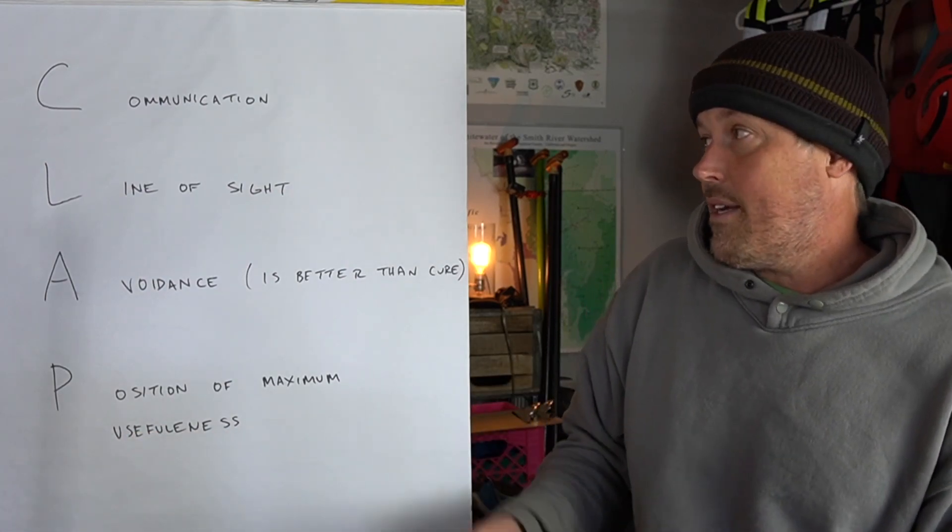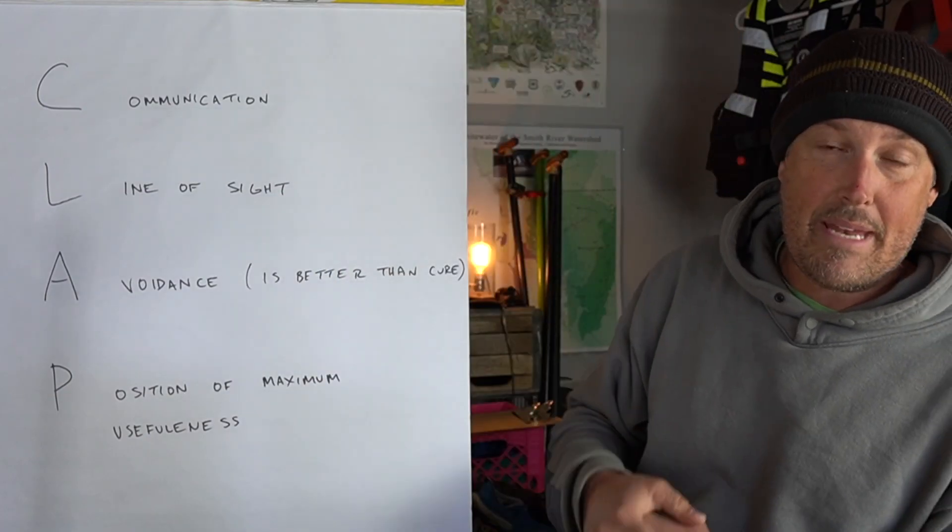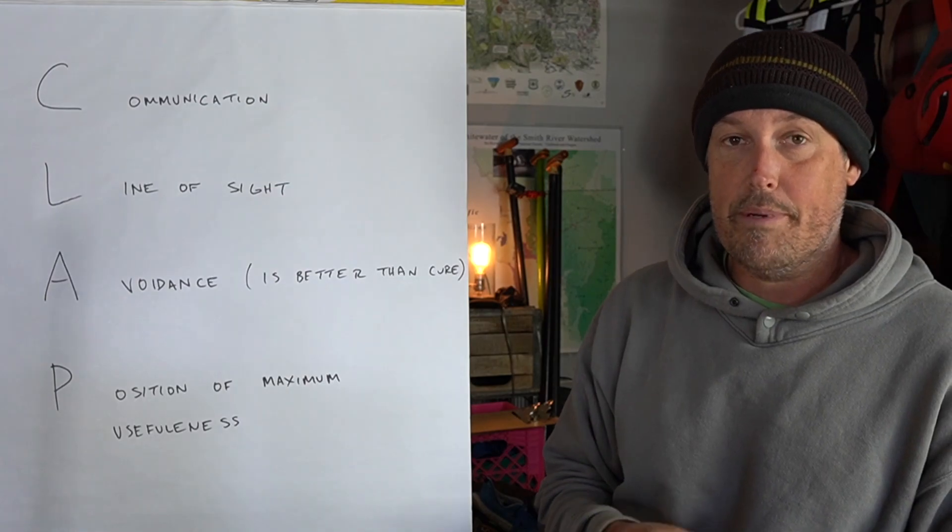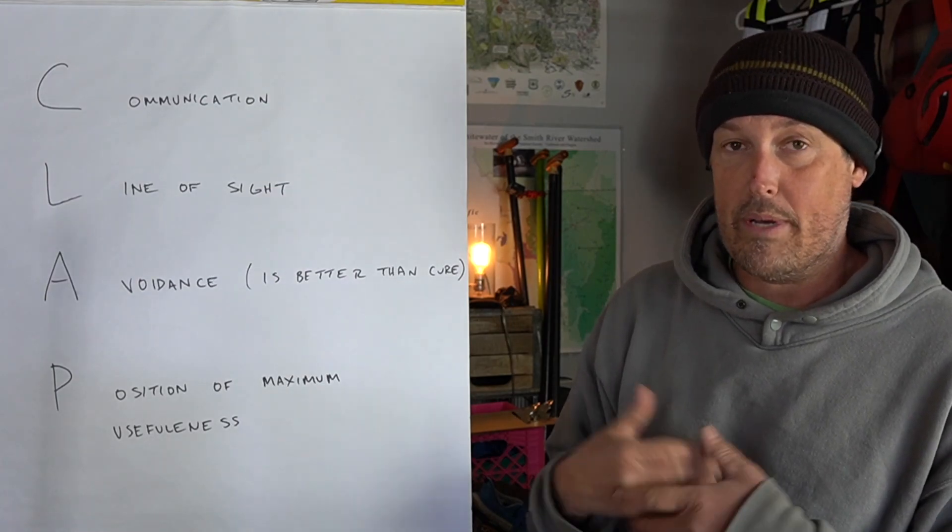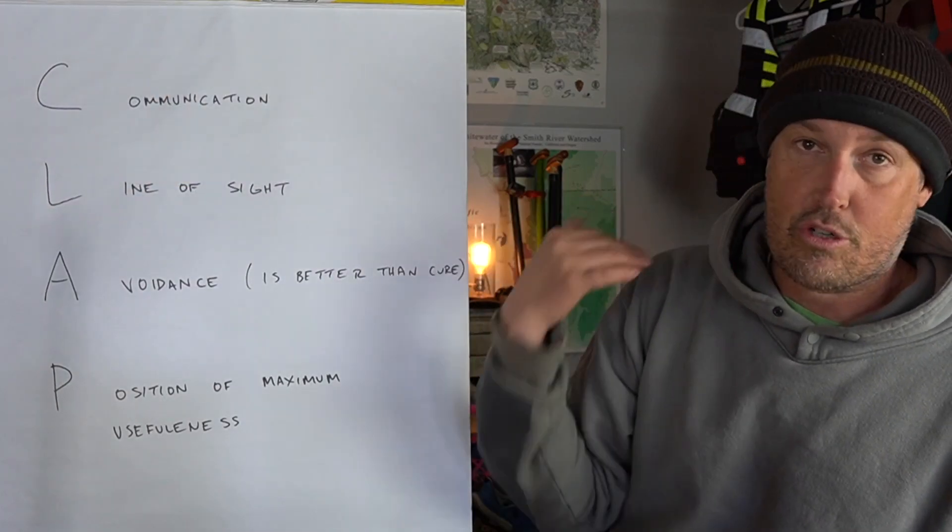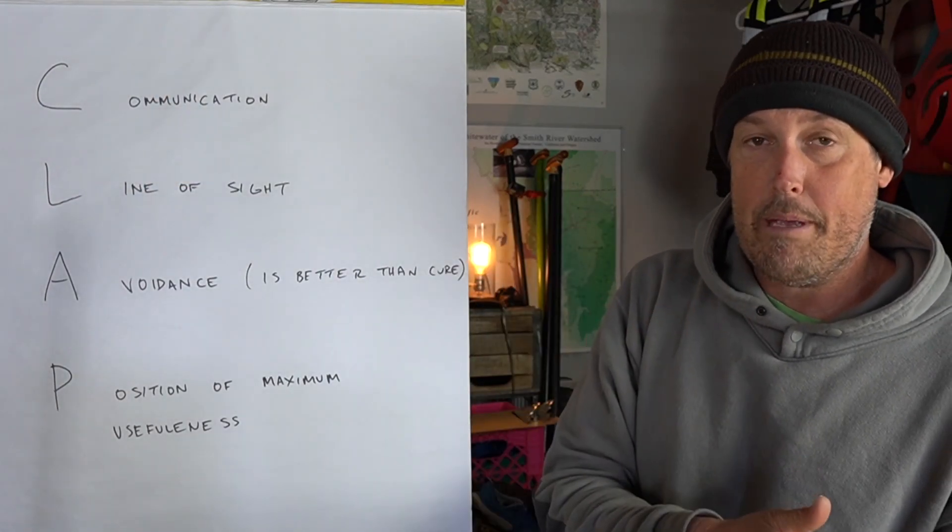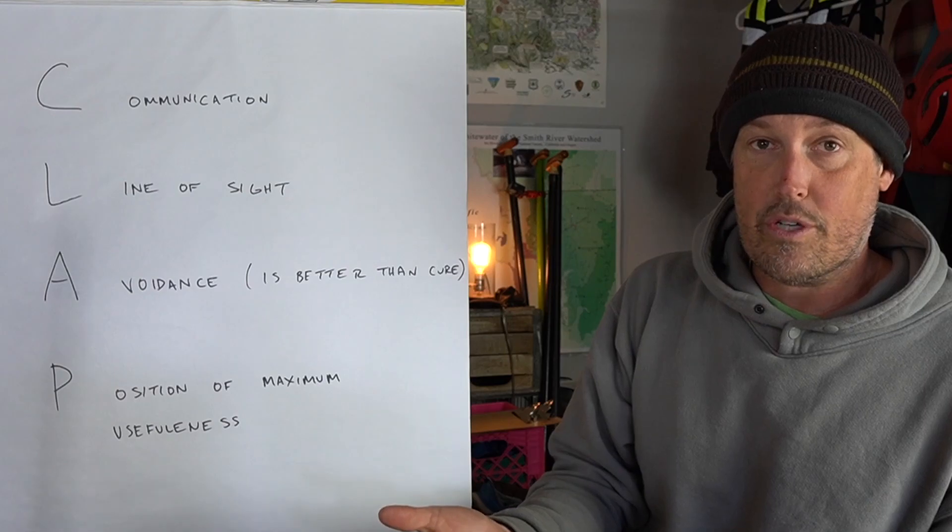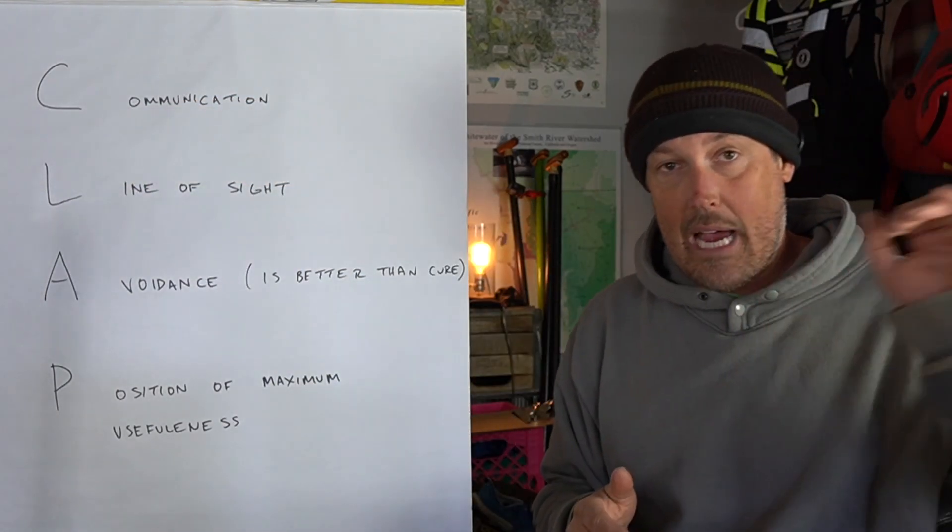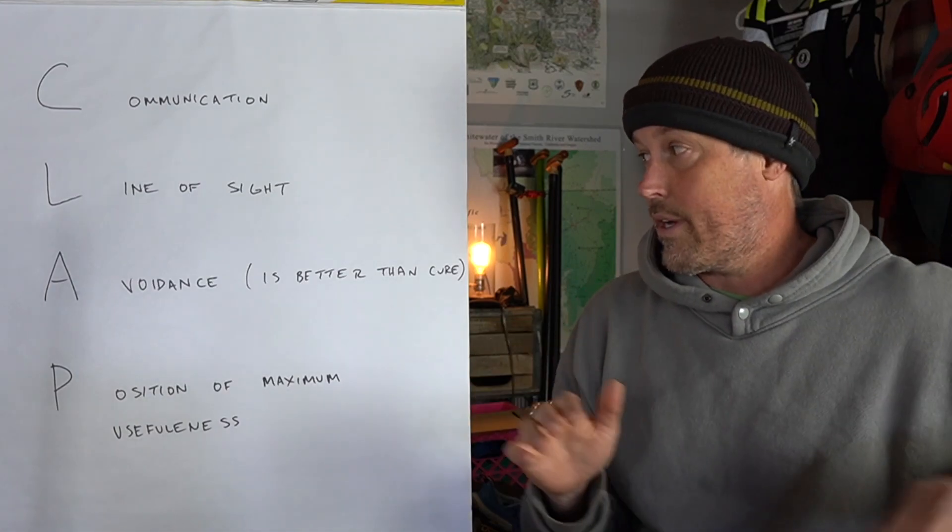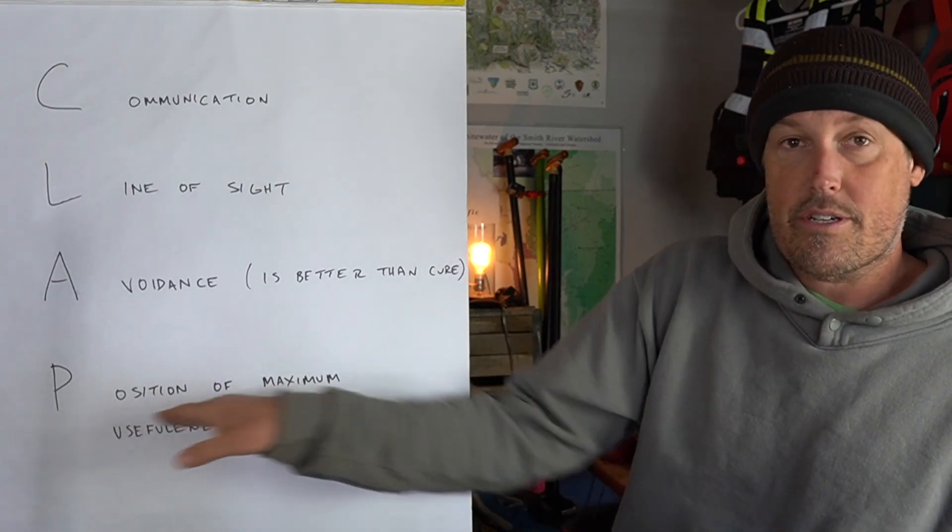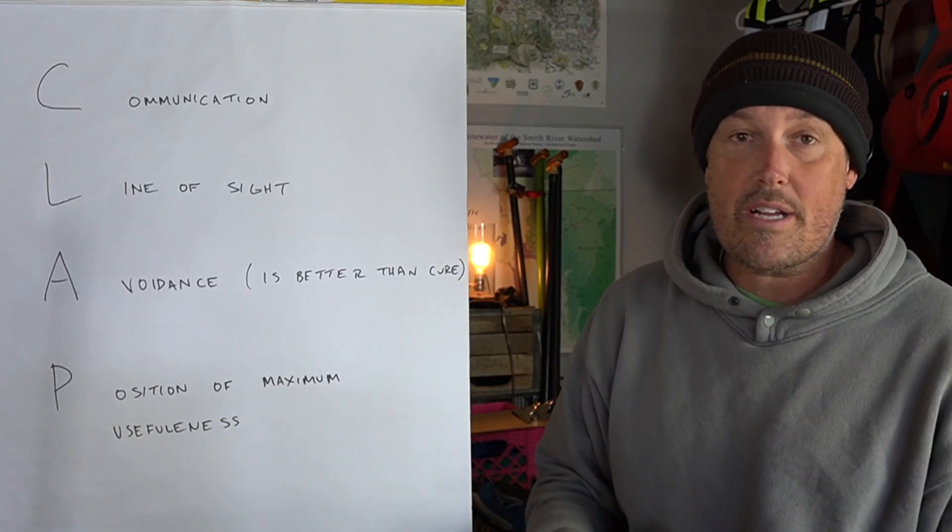Those are some quick thoughts. This is CLAP. This could have been an hour long talk. Each of these can be broken up into more, but I think there's some good principles to think about when we're boating together safely. To reiterate: communication is crucial, line of sight down rapids and between boats is critical, avoiding the things we can avoid, and putting yourself in the most useful spot.